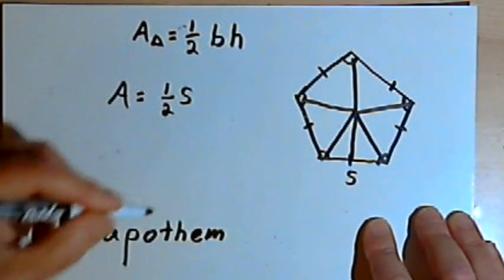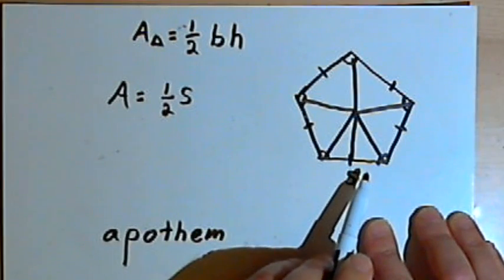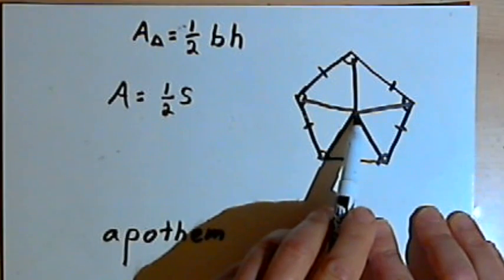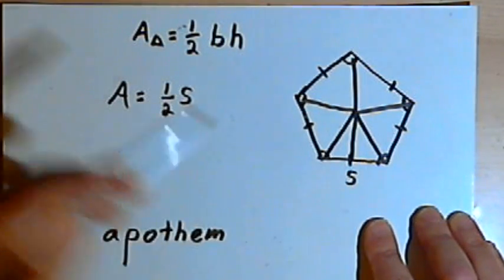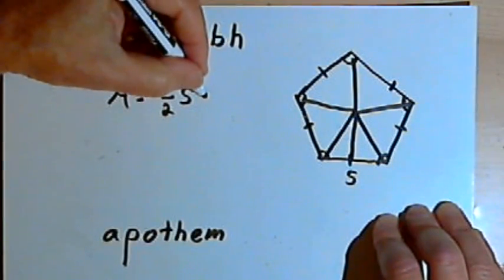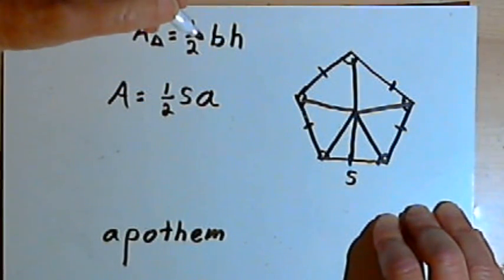So the apothem is a line that's perpendicular to one of the sides and goes from the side to the center. So we're going to say the area for one triangle is going to be one-half times the side times the apothem.